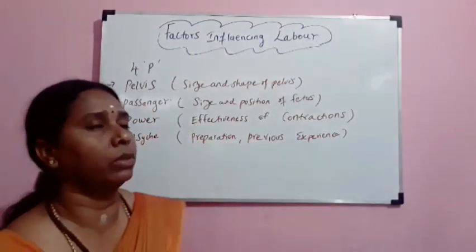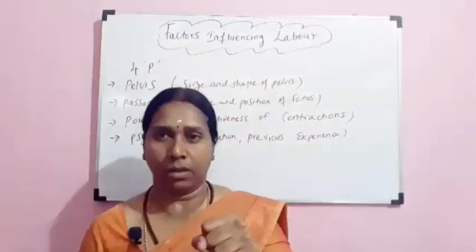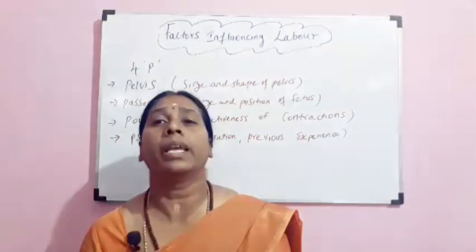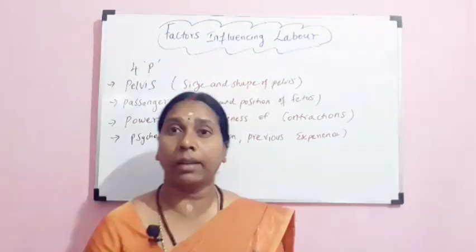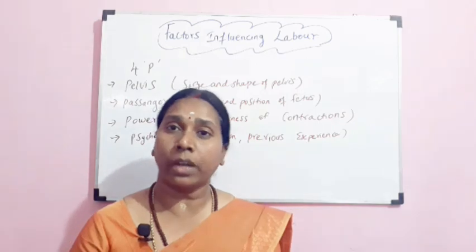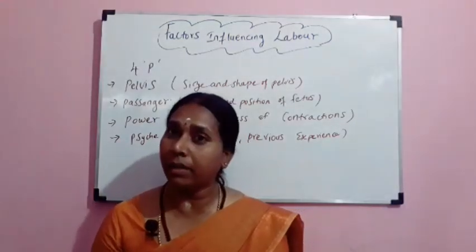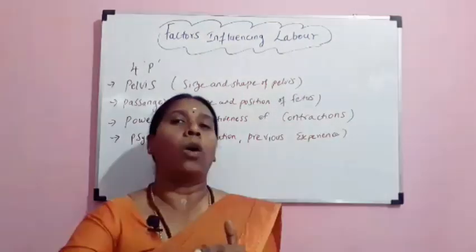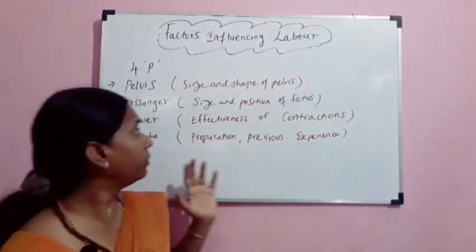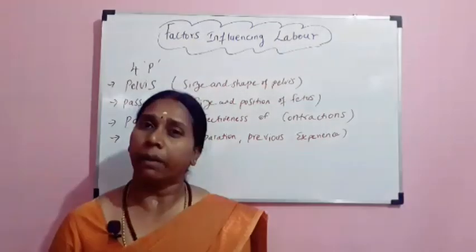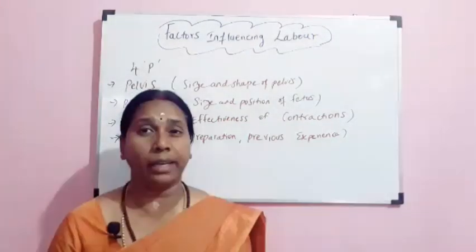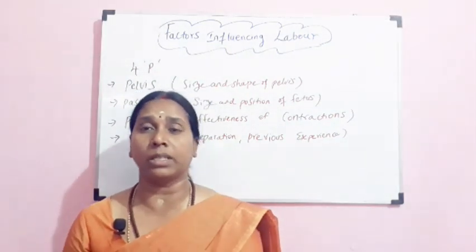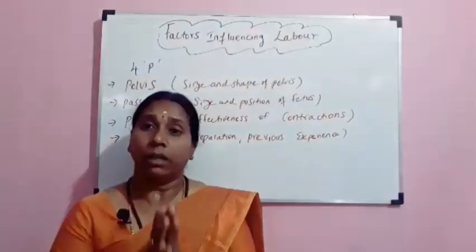Then we have the power. Power is the contraction. The uterine muscles — the myometrial muscles — are specially designed muscles. It is not just contraction and relaxation; it is contraction and retraction, holding the power of the contraction, which helps to push the baby out of the birth canal. When these contractions are not effective, there will be delay in the labor process. The mother may go in for complications such as bleeding, prolonged labor, and the baby may go into asphyxia.